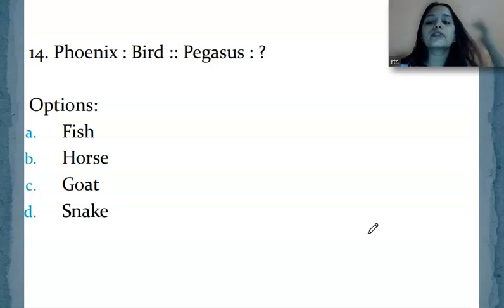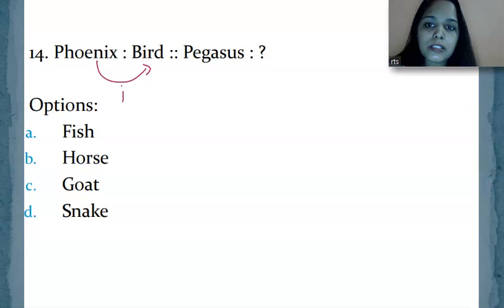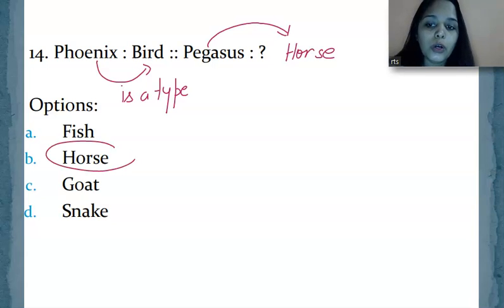Now, phoenix is related to bird in the same way pegasus is related to which one? See, phoenix and pegasus are both mythical creatures. So we suppose phoenix is a type of bird. In the same way, pegasus is a type of horse. So the related word you'll find for pegasus is horse, given in option B.